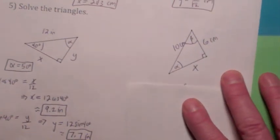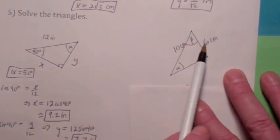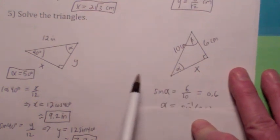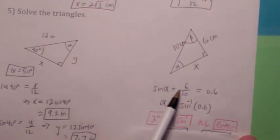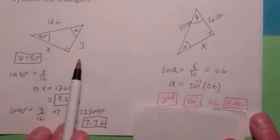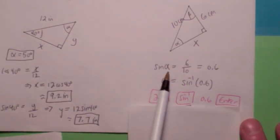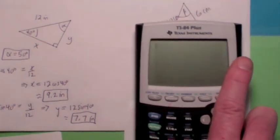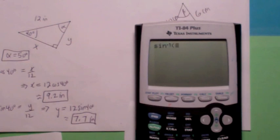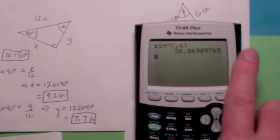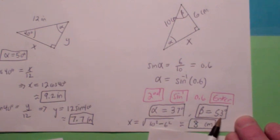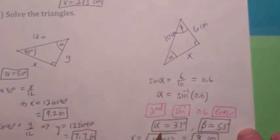What if I don't give you any of the two angles — just these two sides? You could say the sine of alpha is 6 over 10, which is 0.6. Sometimes you have to go from the sine of the angle to the angle itself — in this case you'd use the inverse sine. If the sine of alpha is 0.6, then alpha equals inverse sine of 0.6. On your calculator, hit 2nd, then the inverse sine button, then 0.6 — you'd get about 37 degrees. Once you know alpha is 37, beta has to be 53 since they add up to 90. Then find x using the Pythagorean theorem — you should get 8 centimeters.